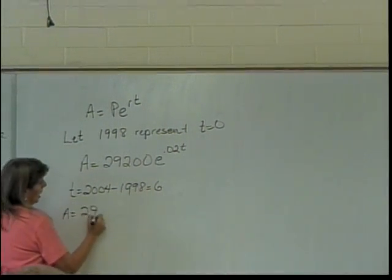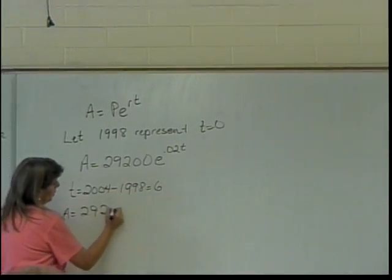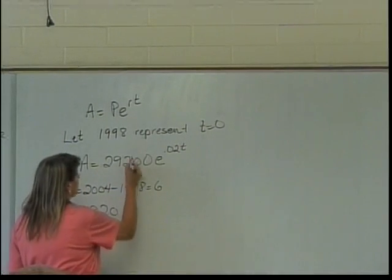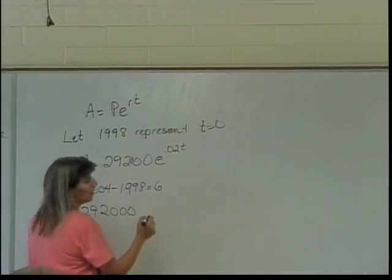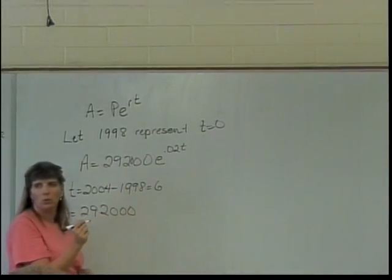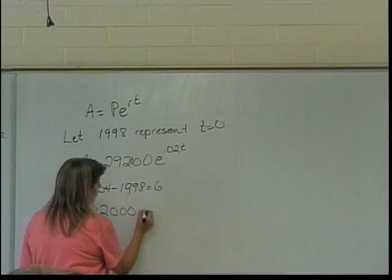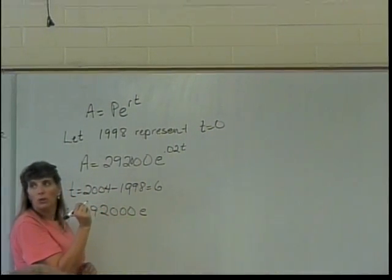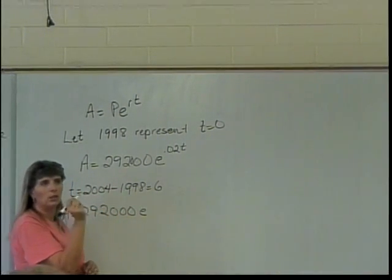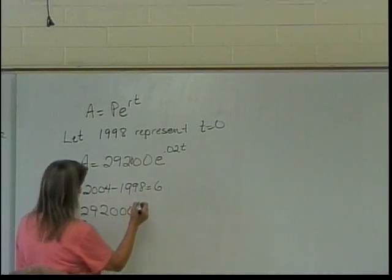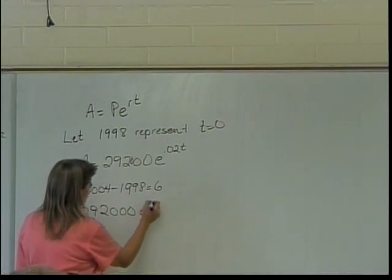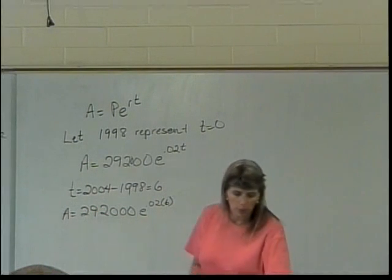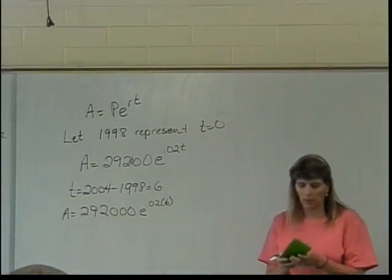So 8 equals 292 — I don't have enough zeros, I lost one. By the way, so did a lot of you in your homework. Your 22,000 amount that you started with on your money became 2,200 for many people. 0.02 times 6 — I'll plug that into my calculator.